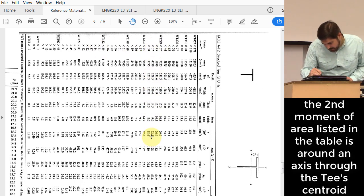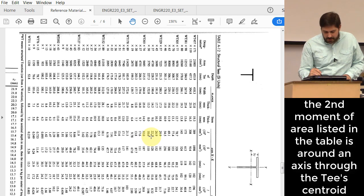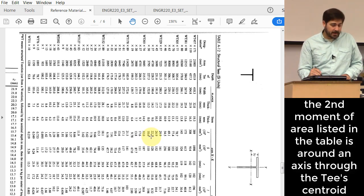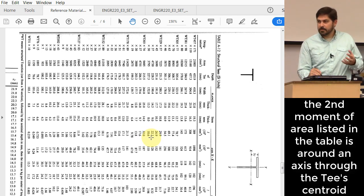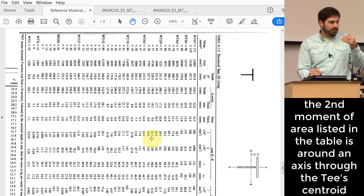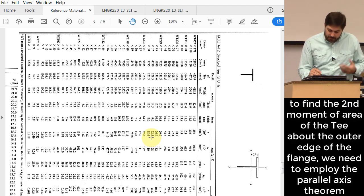When it gives me this i value right here of 22.3 times 10 to the sixth millimeters to the fourth, that is a second moment of area for that shape around its centroidal axis.